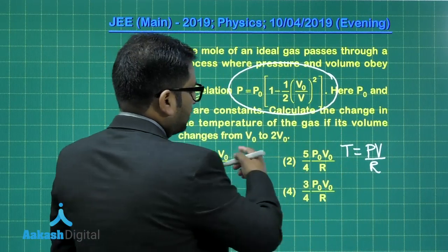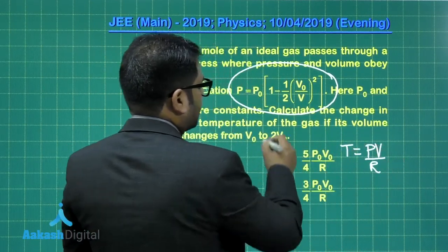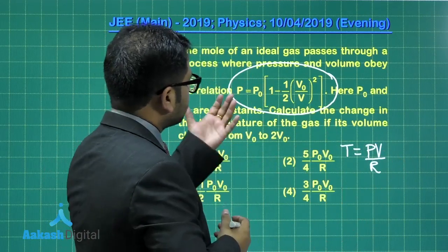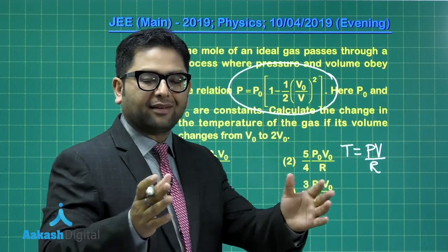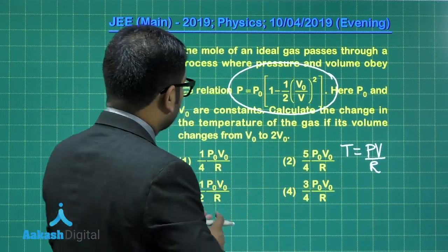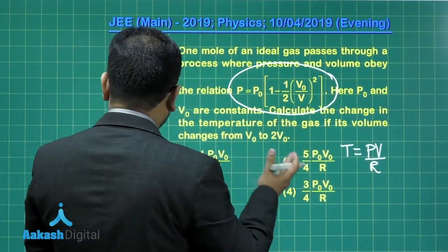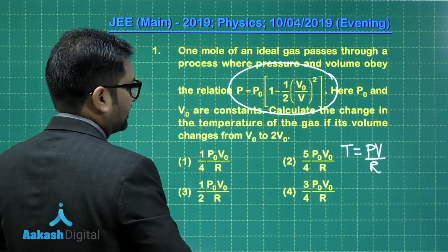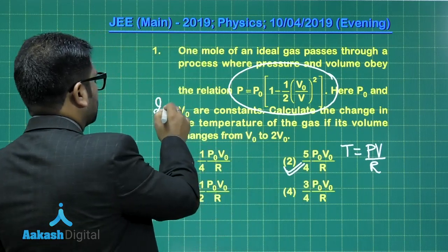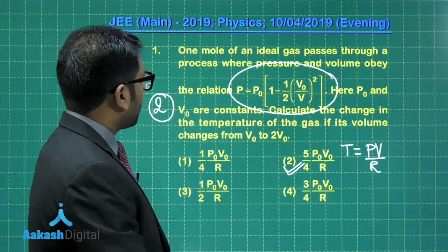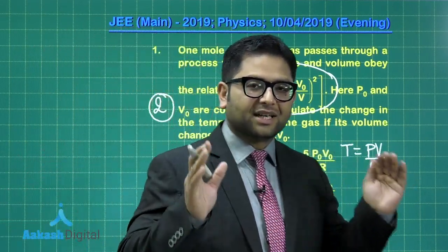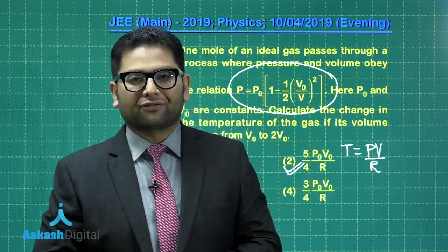You see, the initial volume V₀ and corresponding pressure you can calculate from here. The final volume 2V₀ and corresponding pressure you can calculate. So you get the initial and final temperature. I was supposed to calculate the change in temperature, so I need to do T₂ minus T₁. On solving that, you would get option number two as the correct option for this question. A straightforward one, this must have certainly boosted your confidence level.